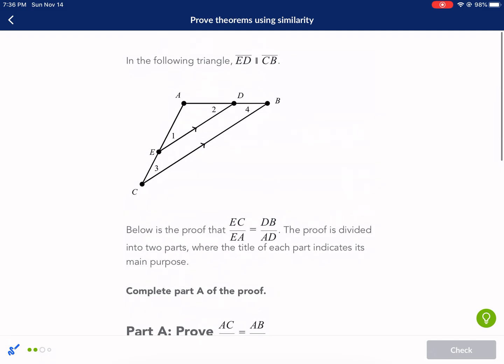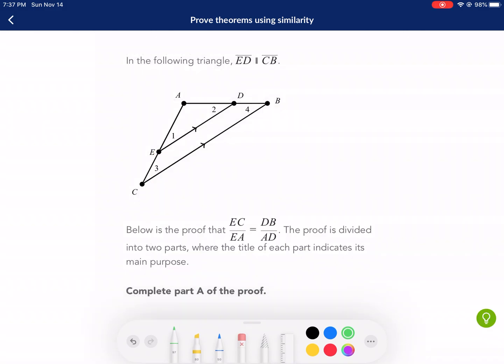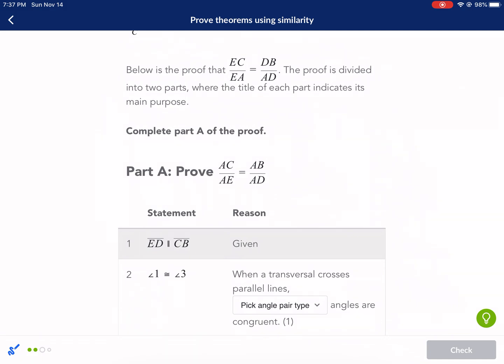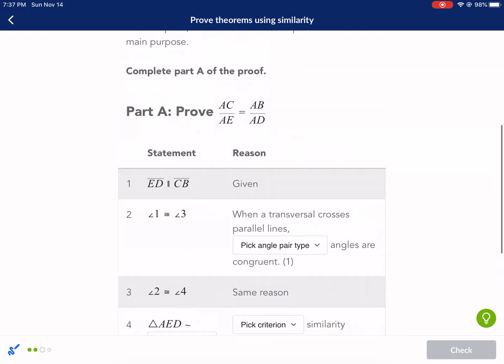Next question. And the following ED is parallel to CB. So now it tells us that it's parallel. We're going to reverse in the exact opposite direction than the previous problem. Below is a proof that EC over EA, there's a lot of looking at different lines here. This is super geometry but that's okay. So EC over EA, we're doing top to bottom, DB over AD. So top to bottom on the right side too. That's the bottom portion and that's the top portion. So now let's go back over here. The proof is divided into two parts where the title of each part indicates its main purpose, complete part A.